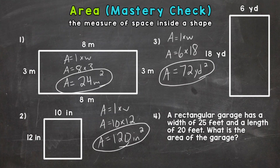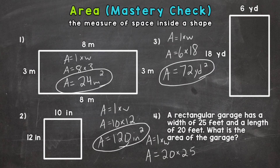Lastly, number four: a rectangular garage has a width of 25 feet and a length of 20 feet — what is the area of the garage? Formula: area equals length times width. Plugging in, we have a length of 20 feet times a width of 25 feet, and that gets us to an area of 500 square feet.